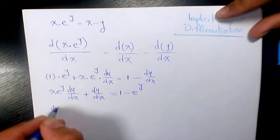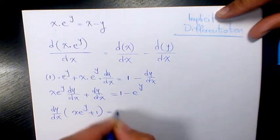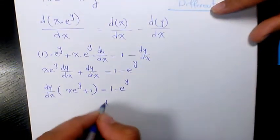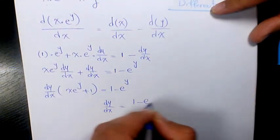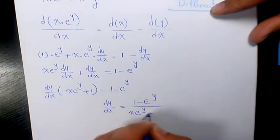Then you factor. dy/dx times x·e^y plus 1 equals 1 minus e^y. So dy/dx will be 1 minus e^y divided by x·e^y plus 1. That's the final answer.